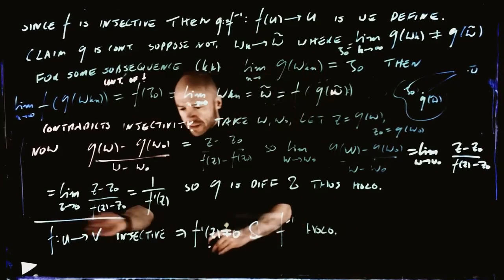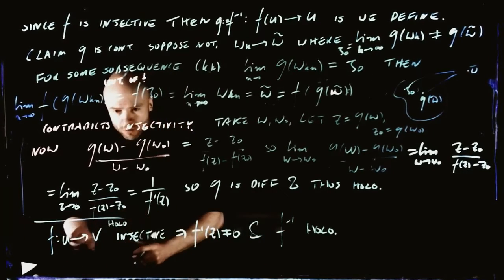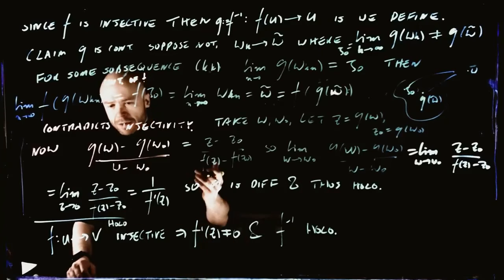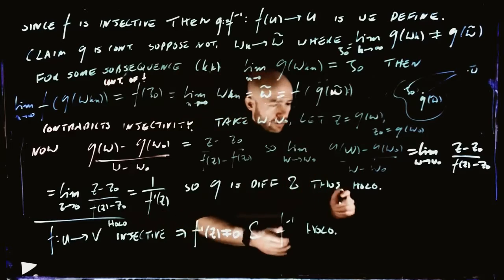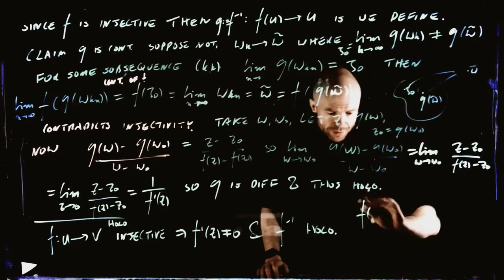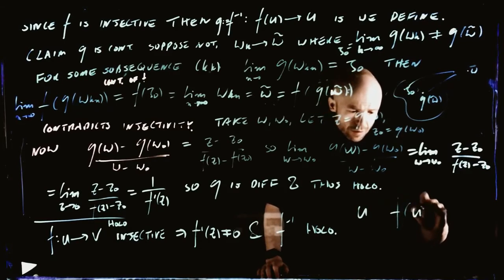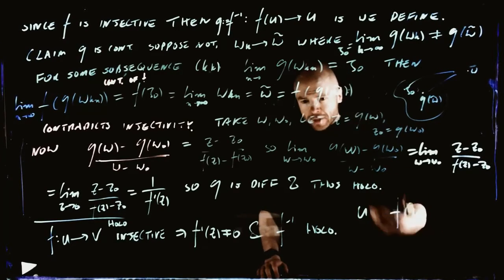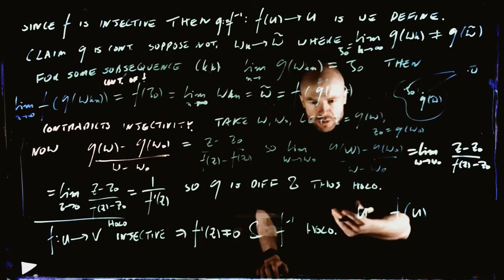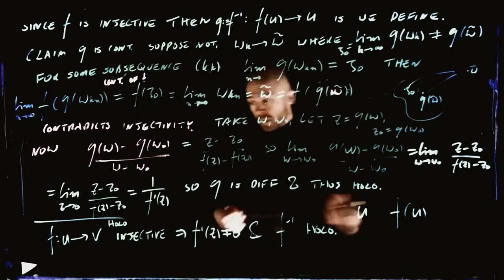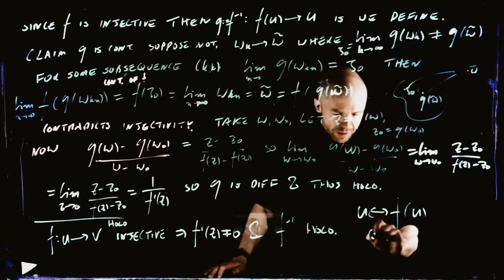Recall, we are saying that something is conformal if it's holomorphic and invertible, in other words, injective. And we say that U and the image of U under an injective holomorphic mapping are conformally equivalent, because we go backwards and forwards with our bijective holomorphic mapping.